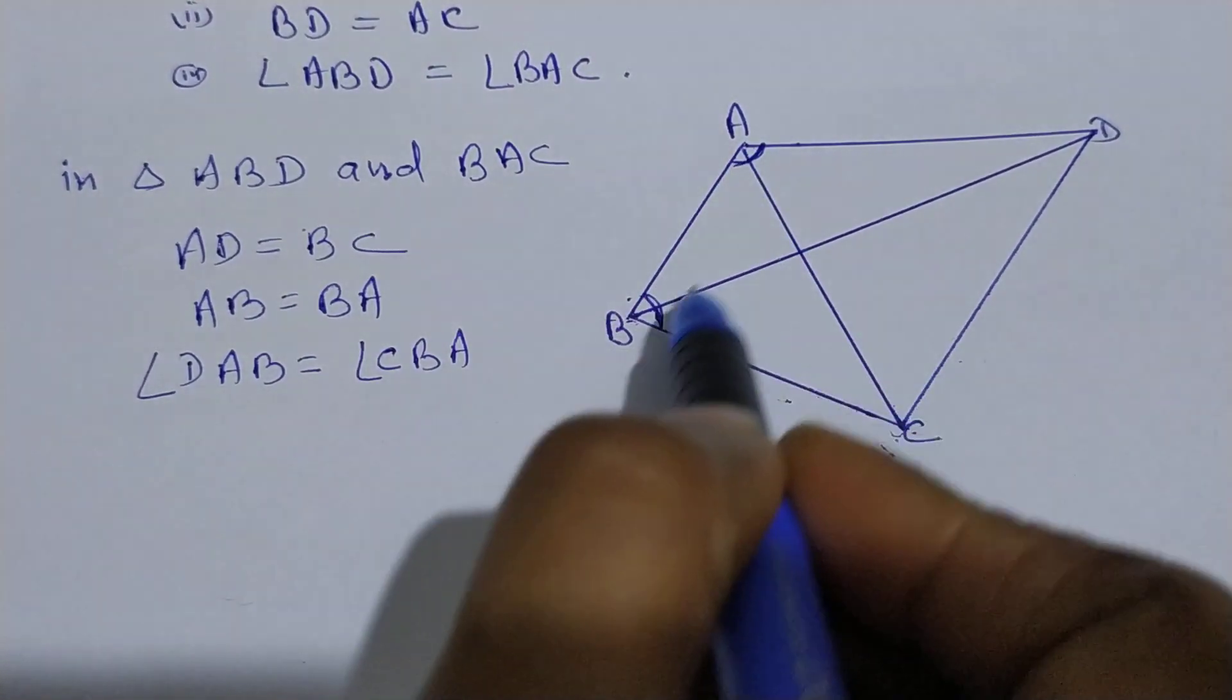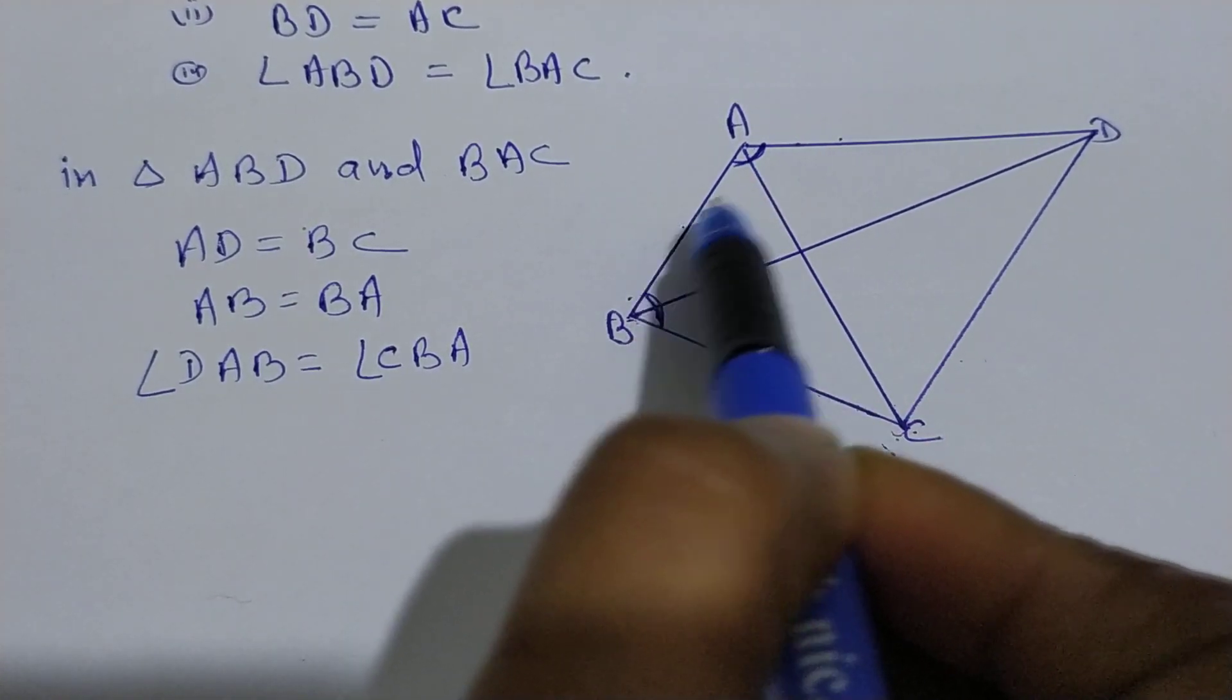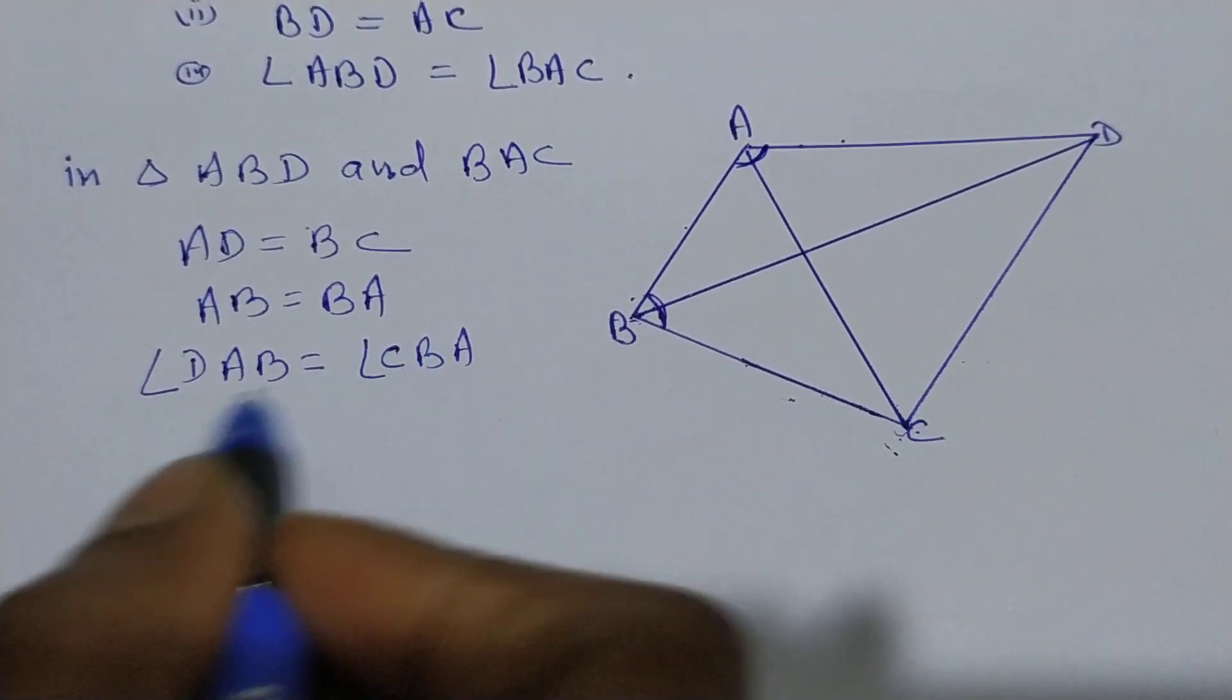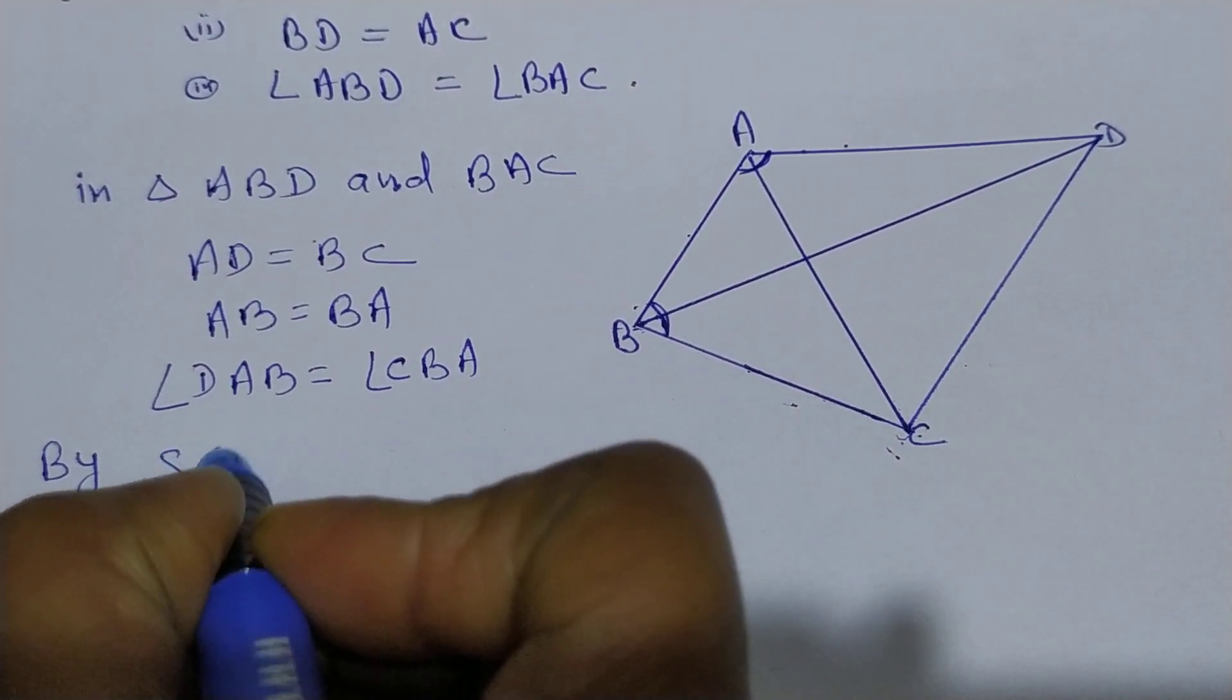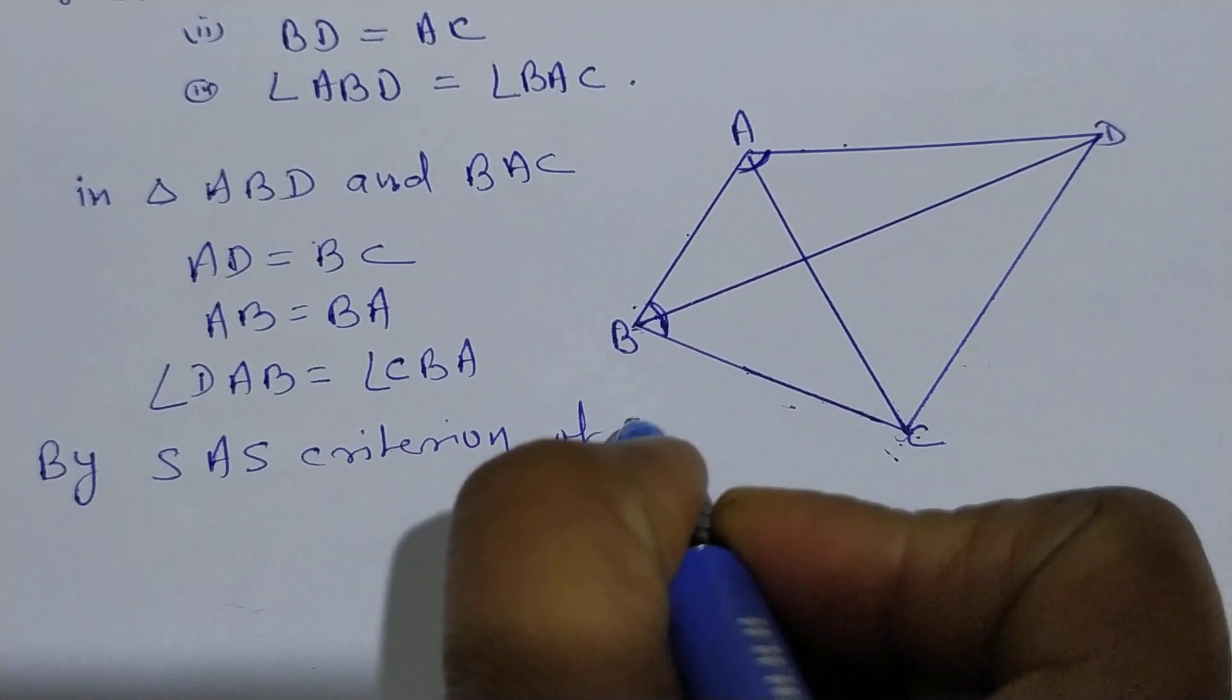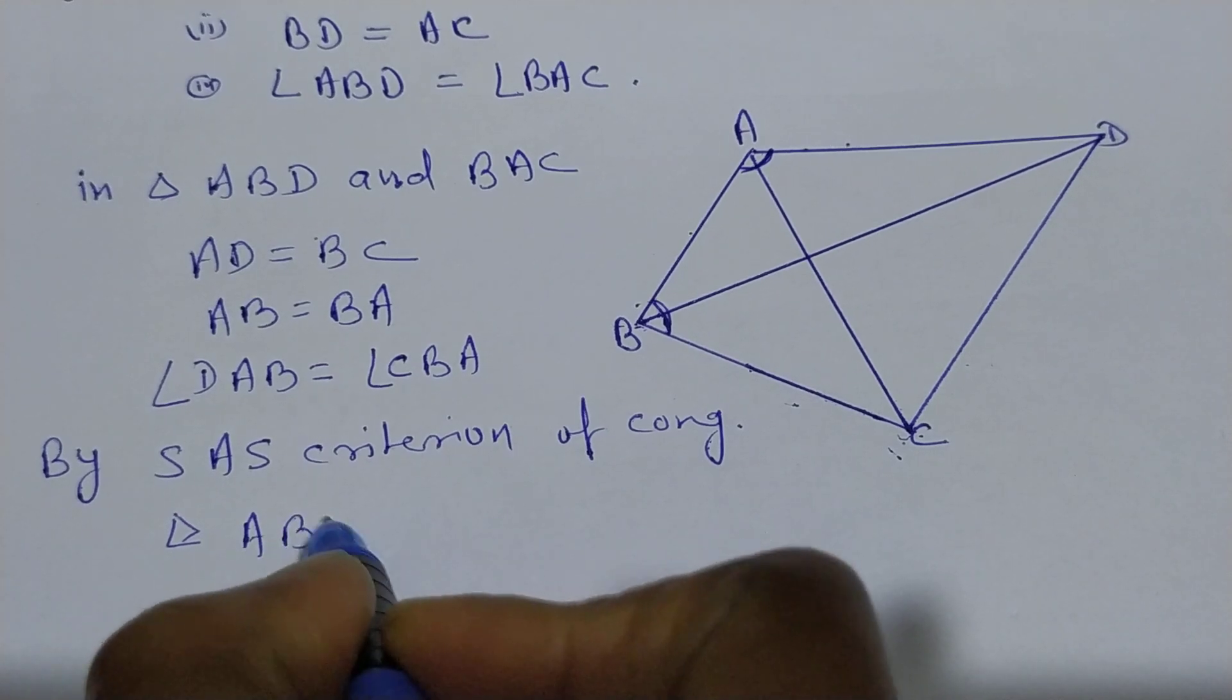So now we have side angle side. In this triangle see, side angle side. So by SAS criterion of congruence, triangle ABD is congruent to triangle BAC. We have proved this.